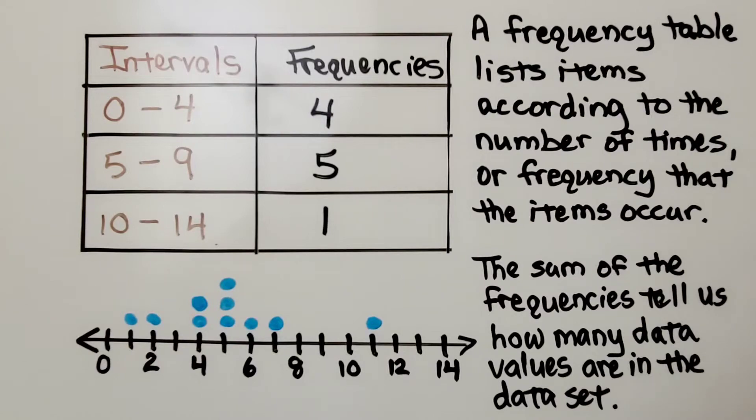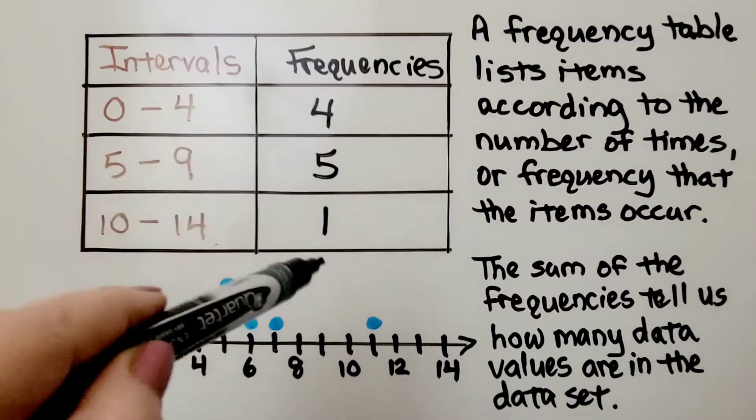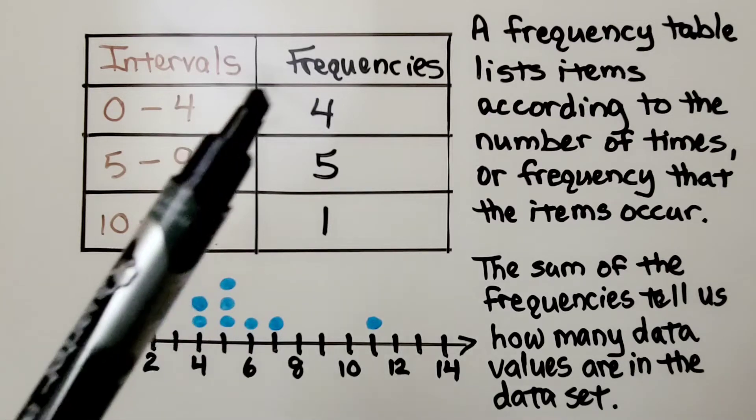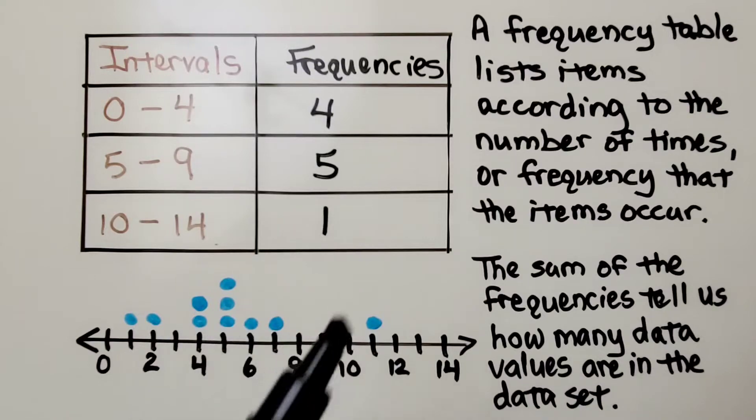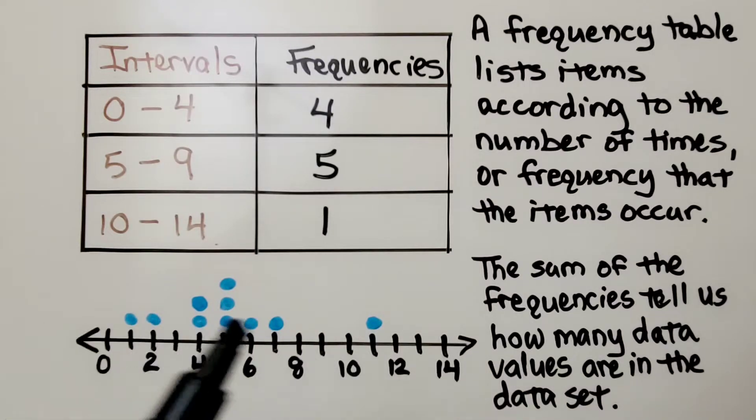A frequency table lists items according to the number of times, or frequency, that the items occur. The sum of the frequencies tells us how many data values are in the data set. We have 4 plus 5 plus 1. We know there's 10 data values. If we put them in a dot plot, we would have 10 data points.